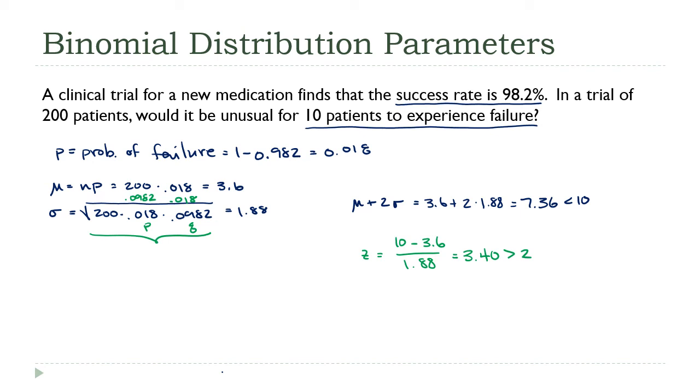Now the mean would have been different, right? Because that 0.018 wouldn't be P anymore. But it's an interesting aspect of the formula. Regardless if you're looking for the average number of successes or the average number of failures, your standard deviation is going to come out the same either way.